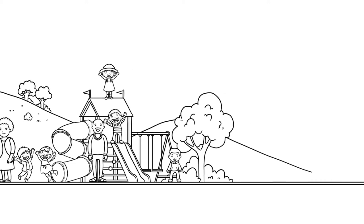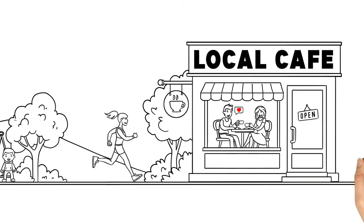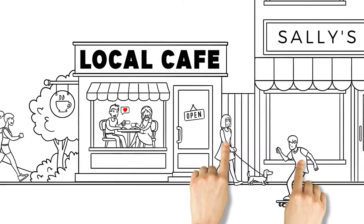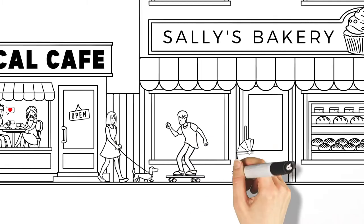30 kilometres an hour zones make it safer and easier to cycle or walk to local shops. And more people walking and cycling means more business for the local area.